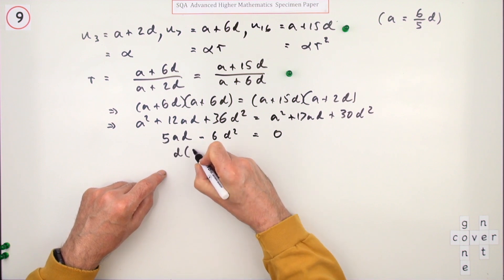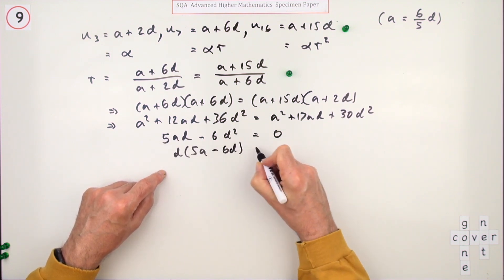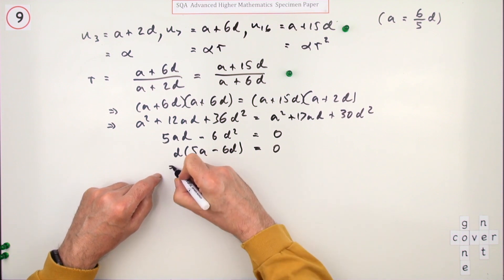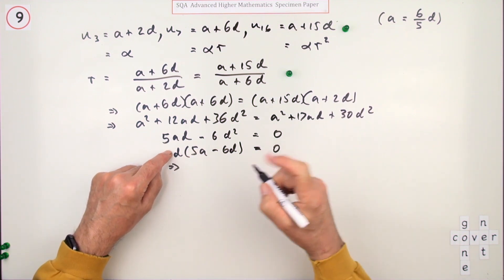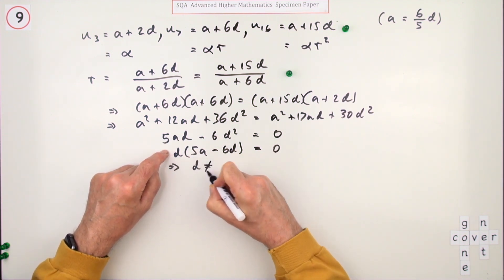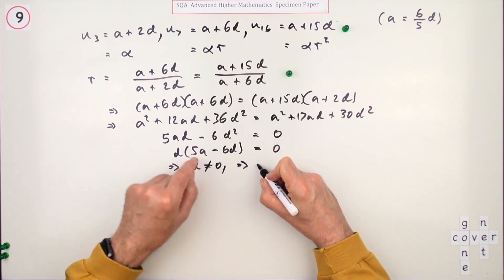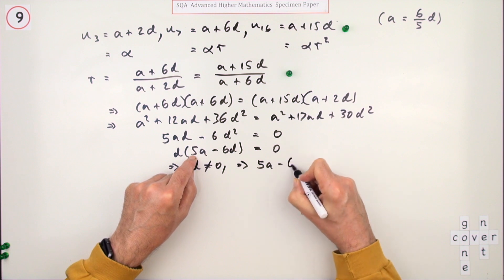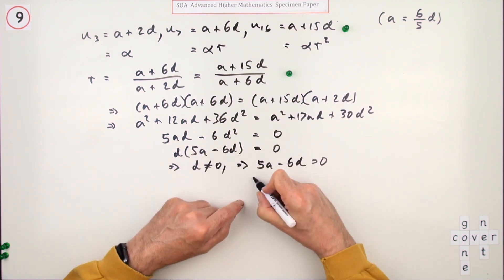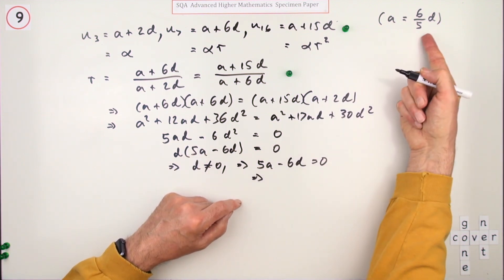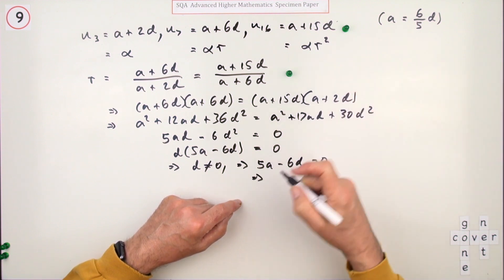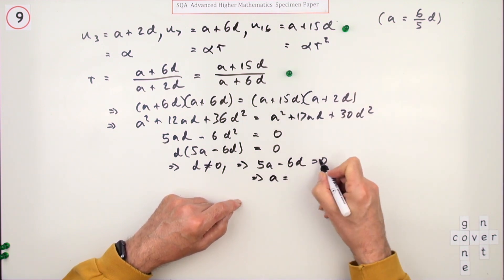Take out the d. 5a minus 6d equals zero, which means either d is zero, which isn't, so since d can't be zero, that means 5a minus 6d is zero. I was just going to write a down straight away, but the result was given, so I should demonstrate how I got it. So a equals 6 upon 5d.